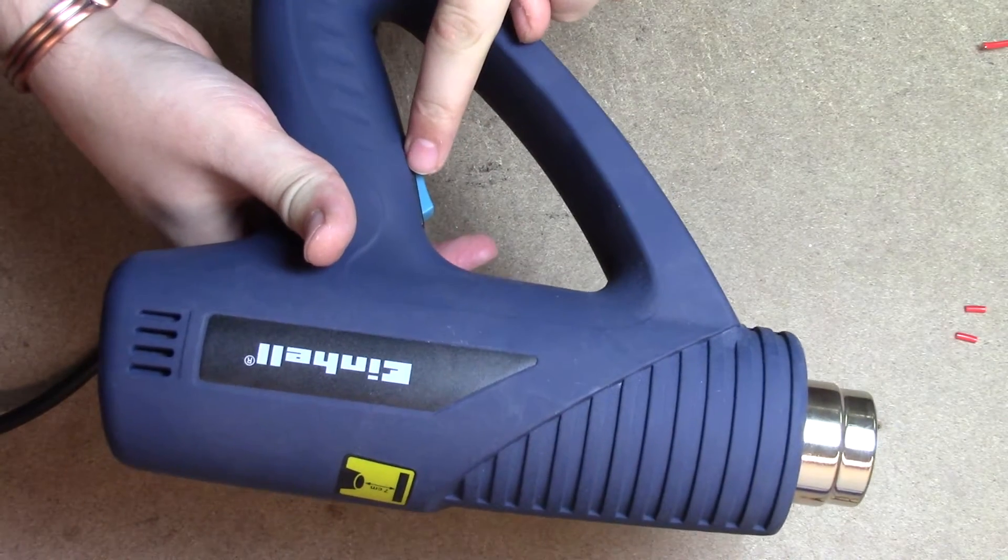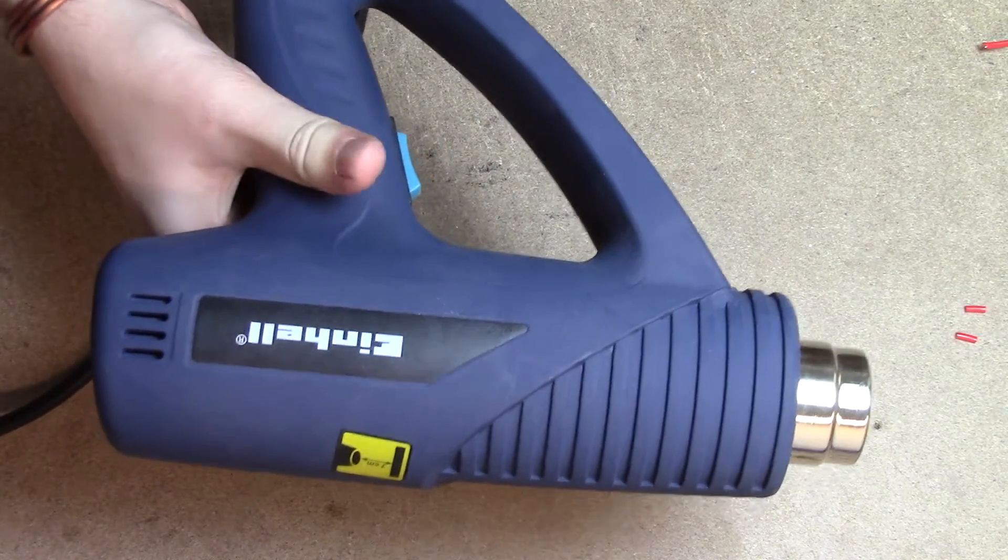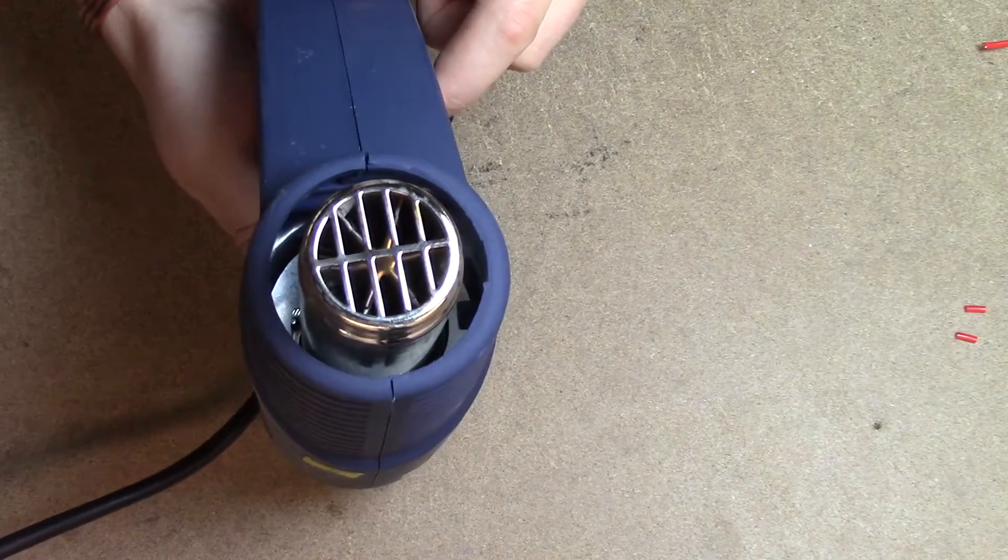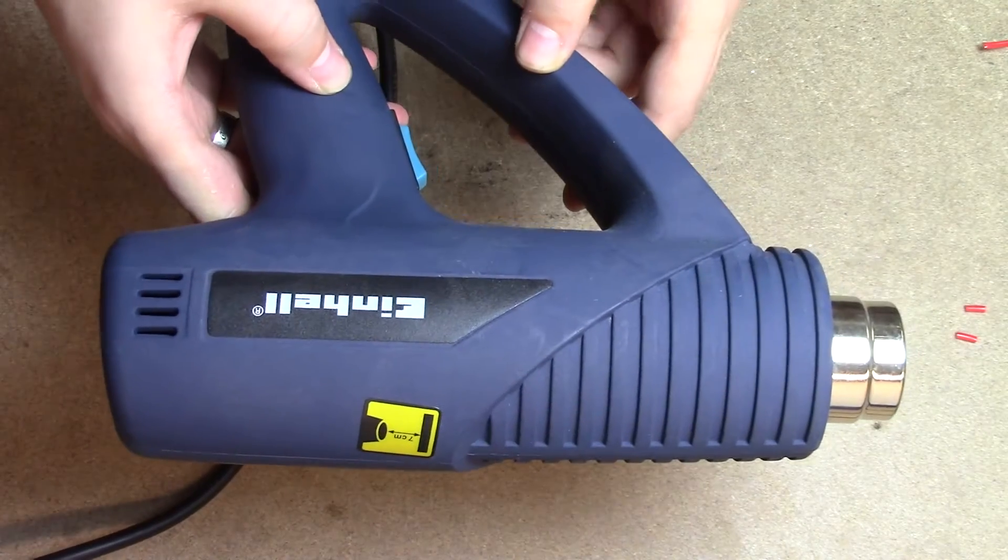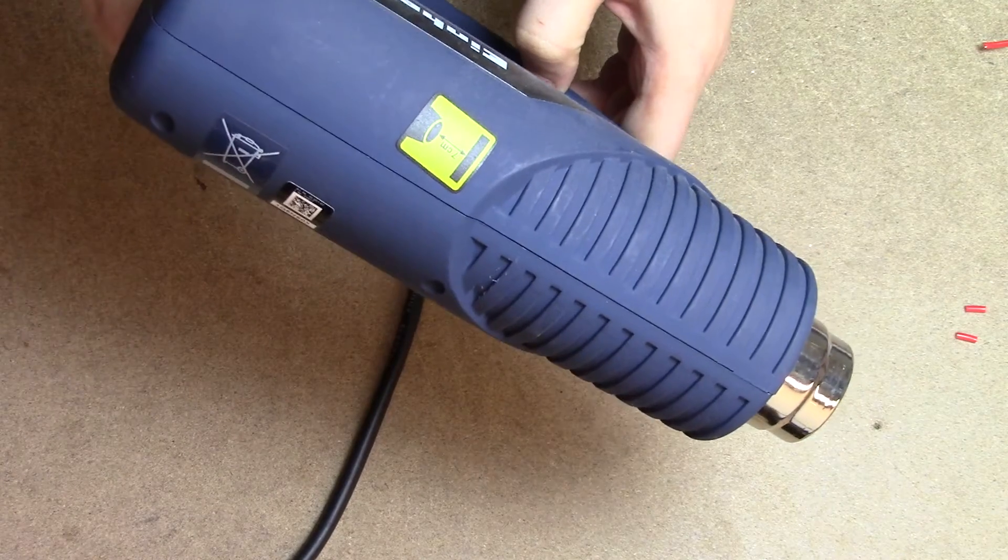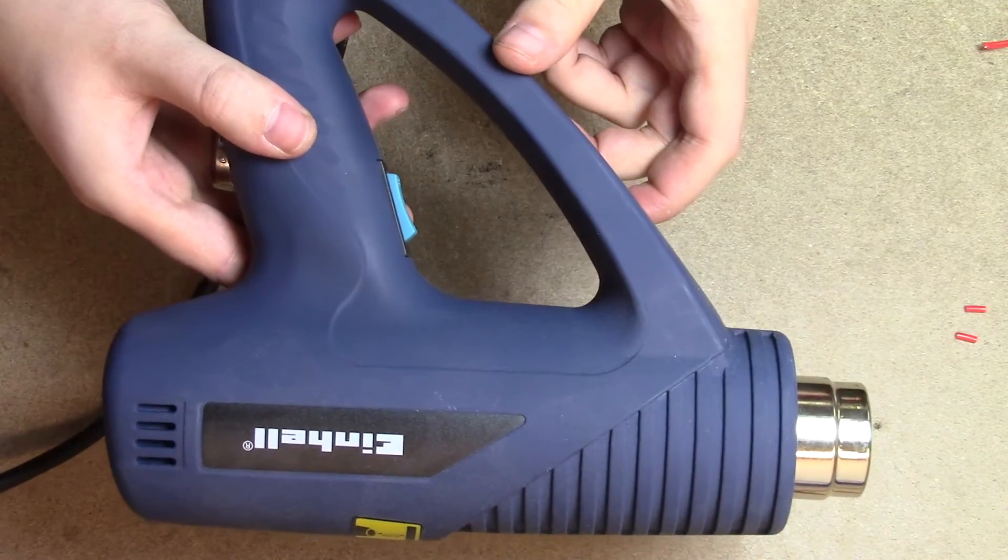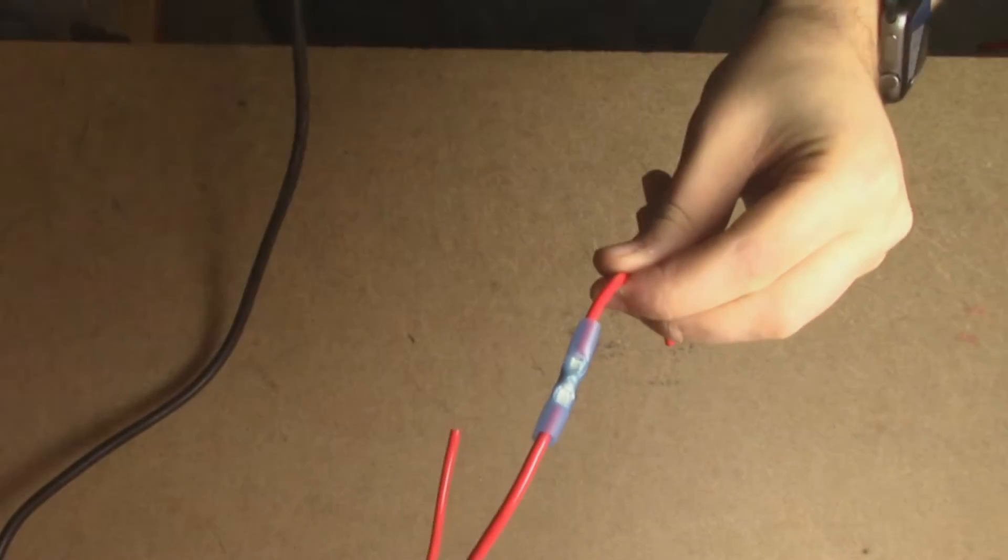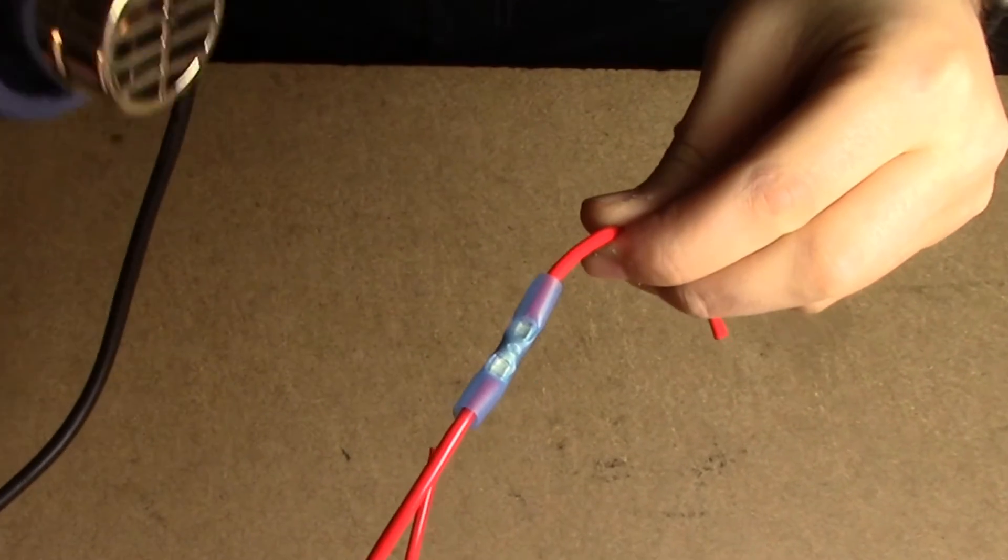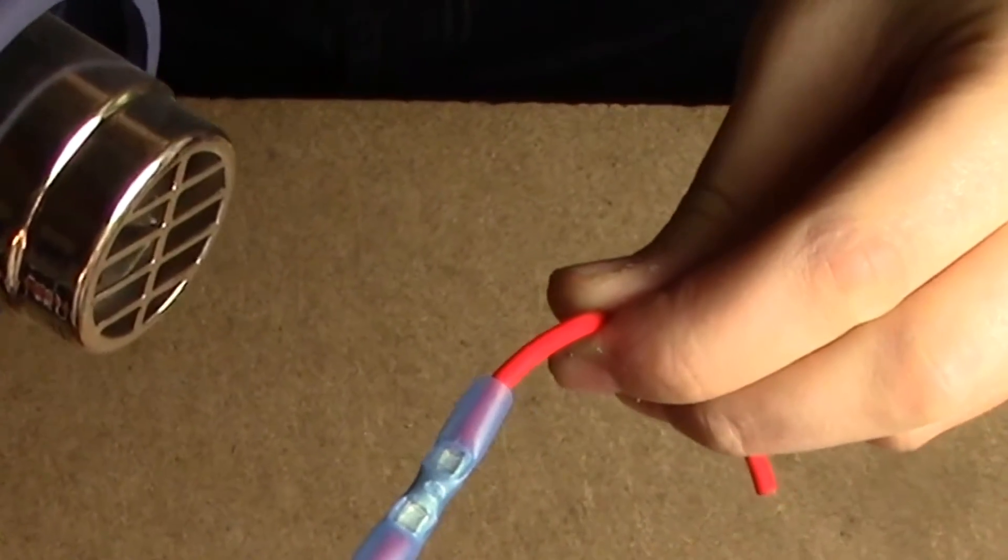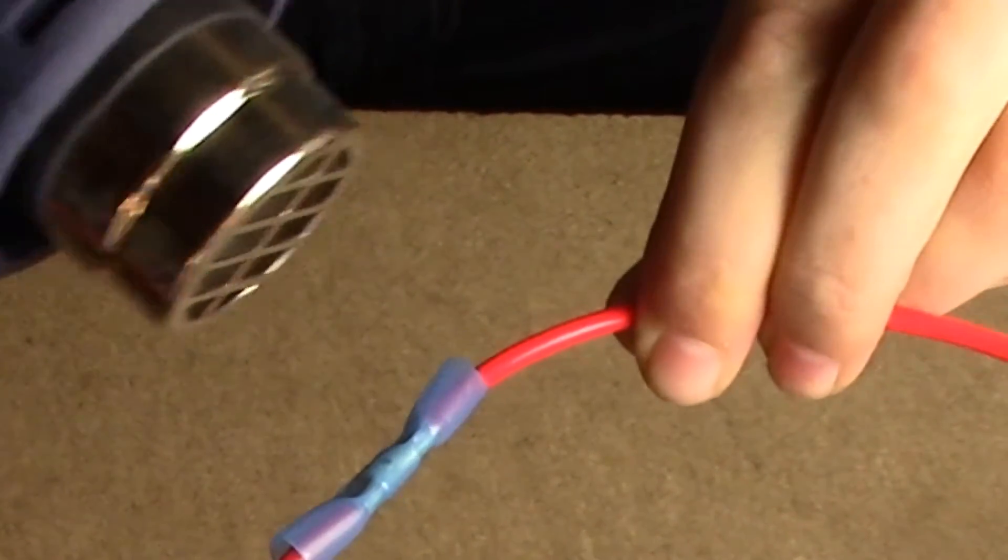Now we're going to use our heat gun, which is German made. It has two settings on it and it's quite simple, and it again is available on our website. Once you've connected both cables, you're going to want to turn the heat gun on and start the process of heat shrinking.